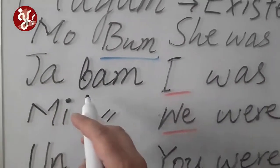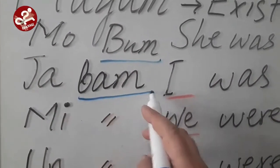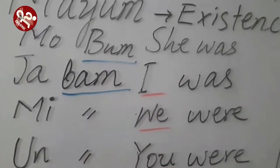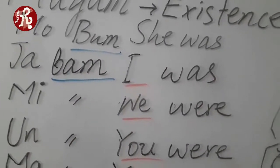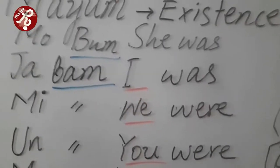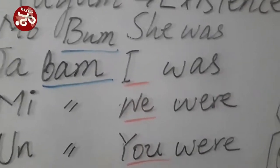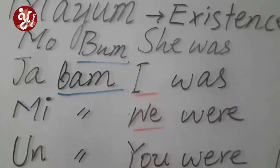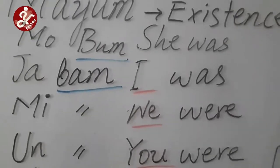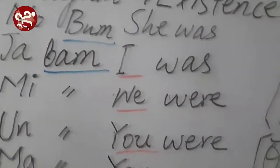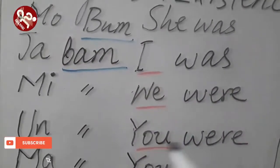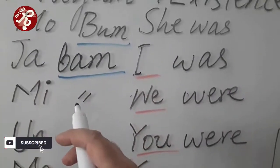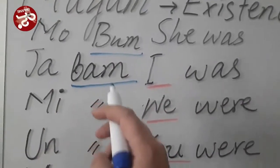Ja Boom means 'I was'. Boom is not a Boom that blasts — so be careful when you are talking about Burushaski in an aeroplane or in a sensitive area. You say 'Boom' and somebody may arrest you for the Boom! So Ja Boom means 'I was'.